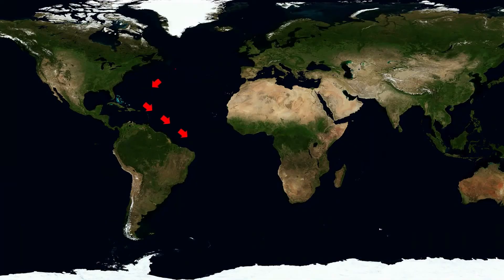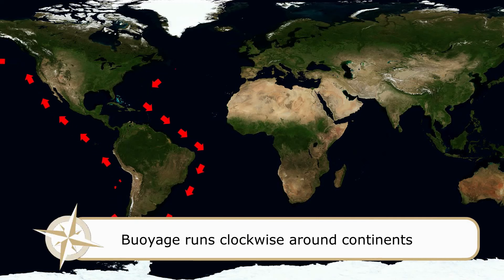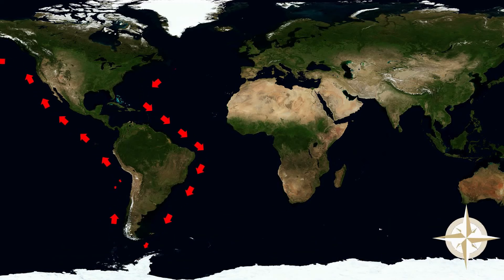If we look at it on a world scale, direction of voyage runs clockwise around continental land masses. I've illustrated here around the North and South American continents the way that direction of voyage actually runs. You need to bear in mind, however, that in places where there's a gap or an island, direction of voyage may not be immediately obvious.